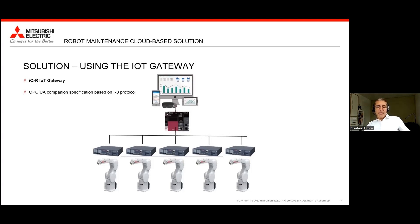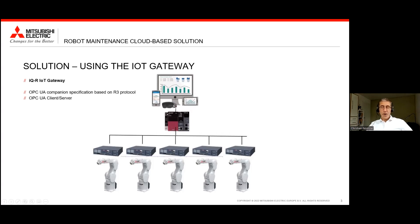It comes with a lot of predefined and built-in features already. The most important one is that we have communication to our robot controllers and we turn that robot information into an OPC UA standard structured way of information. The module acts as an OPC UA server or client. It acts as an MQTT publisher to provide data to cloud systems, but also at the same time we can set it up as an Azure IoT hub connector.